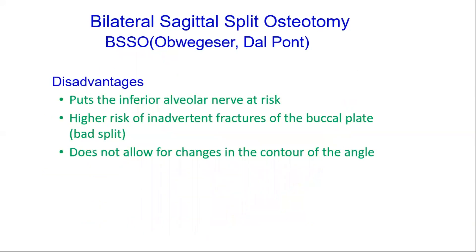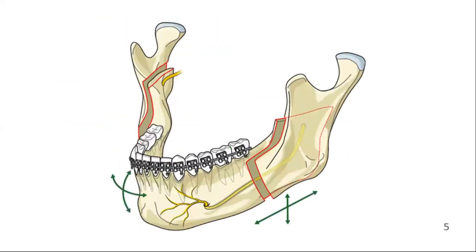However, it may be associated with a higher risk for iatrogenic nerve damage through the splitting procedure. This is a universal procedure that can be employed for all mandibular movements. To illustrate the procedure, we will here show the correction of mandibular retrognathism.